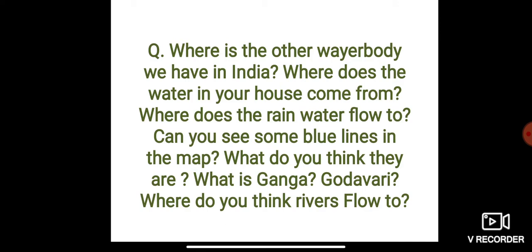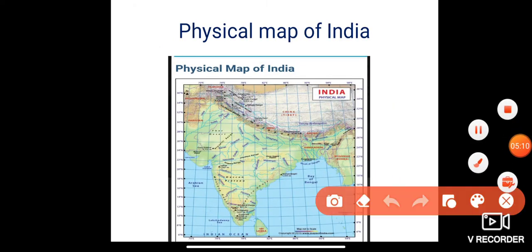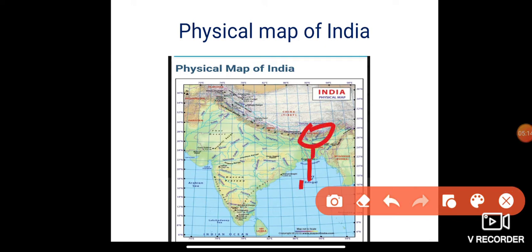Always remember, a river always originates from the mountains, then it flows toward the plain area, and finally it mixes into the ocean or the sea. This is how a river works.